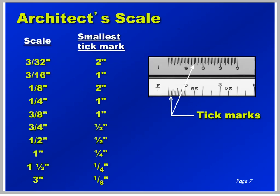A typical three-sided architect's scale will have 3/32nds equals a foot scale up to 3 inch equals a foot scale. The larger the scale, the more information about each foot can be noted. On the 3/32nds and the eighth inch scale, each tick mark is equal to 2 inches. As the scales increase, the smallest tick mark decreases — on the 3/16ths, quarter, and 3/8ths scales, the smallest tick mark is now an inch. On larger scales up to 3 inch, the smallest tick mark equals an eighth of an inch. Becoming familiar with these tick marks is very important in learning to read scales.